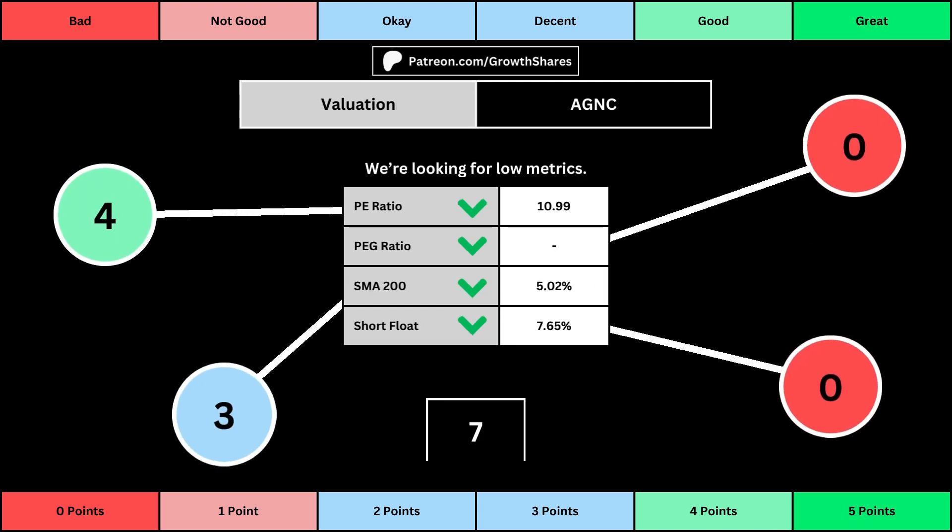This third set of metrics deals with the valuation of the company's stock based on its business. Think of the PE ratio as a measure of speculation around the stock — we want them low. The PEG ratio adds earnings growth with the PE ratio. Then, the 200-day simple moving average is the average stock price over that period; we want that low because it means we have a cheaper stock price. And short float is basically how bearish other investors think of the stock. For these four metrics, we want the values to be as low as possible — that will give us a higher point total within the bubbles.